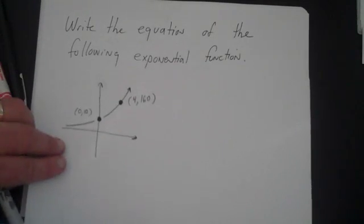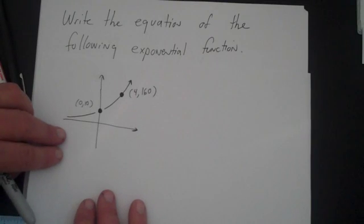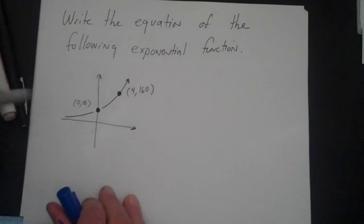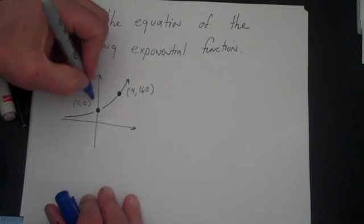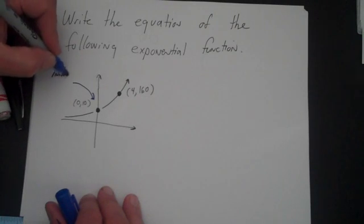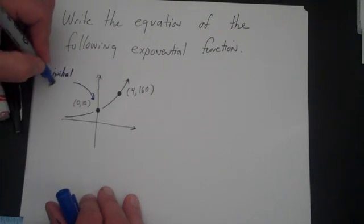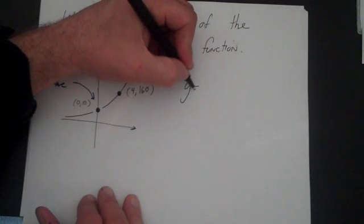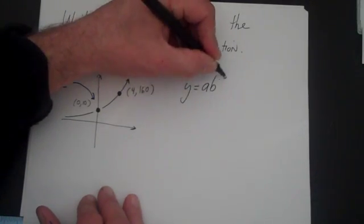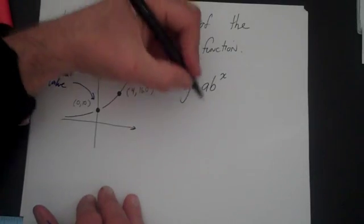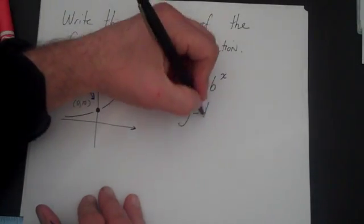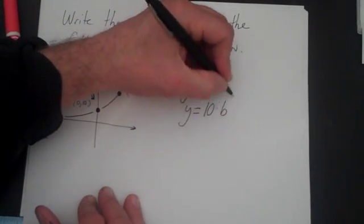Let's do another problem, and now let's do it from a graph. Write the equation of the following exponential function. The key again here is that if you notice right here, this is the initial value of the function. If that's the initial value of the function, then we know it's y is equal to a times b to the x. Plug in the initial value. The initial value is the value of y when x is 0, so that's 10. So that's y is equal to 10 times b to the x.